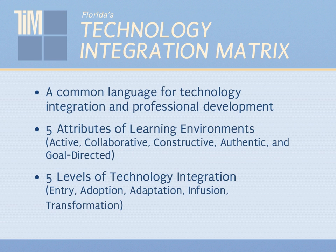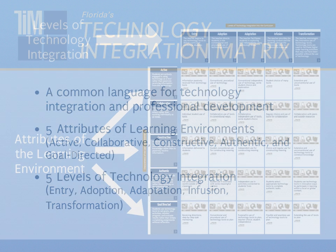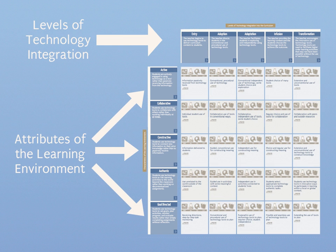The Technology Integration Matrix, or the TIM, is a model that provides a common language for describing and evaluating technology integration in K-12 settings. The TIM describes five attributes of meaningful learning environments across five levels of technology integration. The TIM specifically focuses on pedagogy and the pedagogical approach you use to technology integration — it's not specific to hardware or software or lessons, although it includes a lot of examples of all of those things.